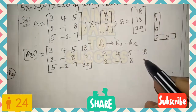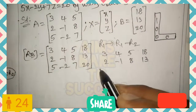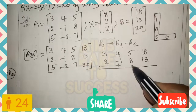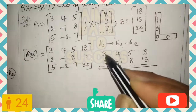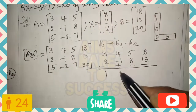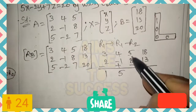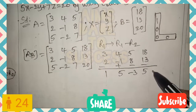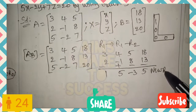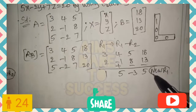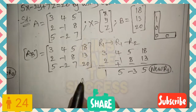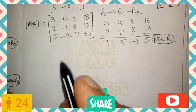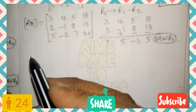R1 values are 3, 4, 5, 18 and R2 values are 2, -1, 8, 13. Subtracting with opposite signs: 3-2=1, 4+1=5, 5-8=-3, 18-13=5. This gives us the new R1 as 1, 5, -3, 5.